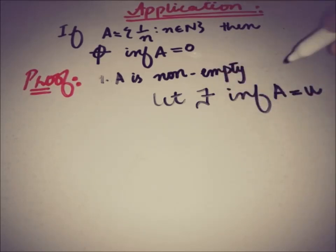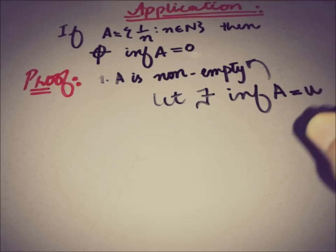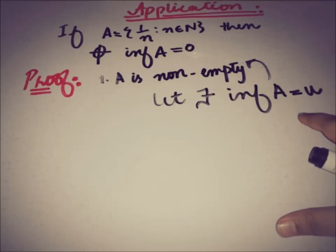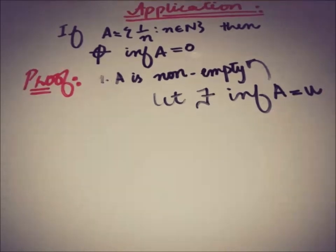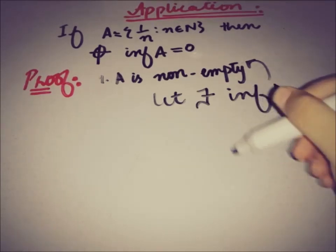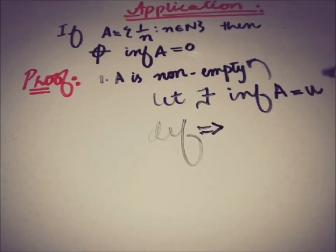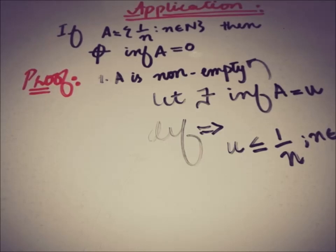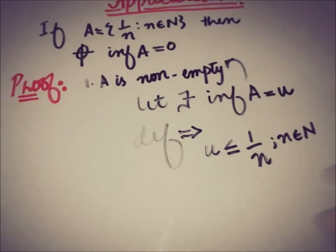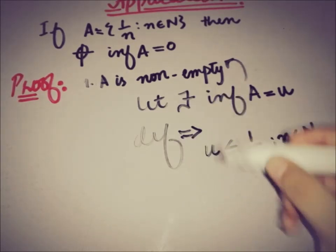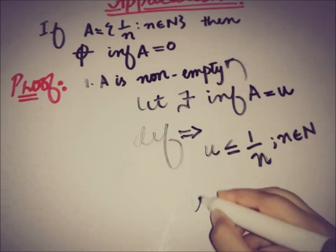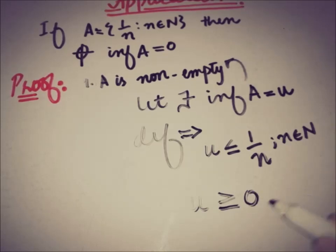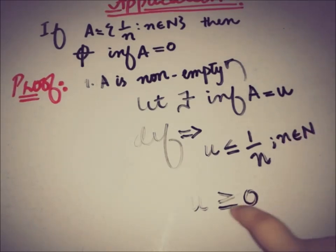We talk about the infimum because A is non-empty. By the definition of infimum, u is less than or equal to every element of the set. Since A has elements 1/n where n belongs to natural numbers, it follows that u is greater than or equal to 0. This is extracted from the definition of infimum and the given information about set A.